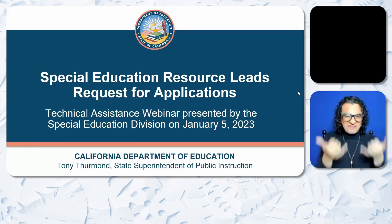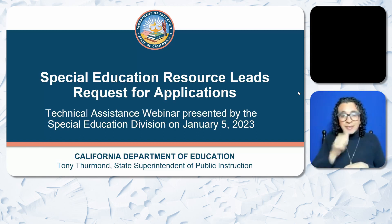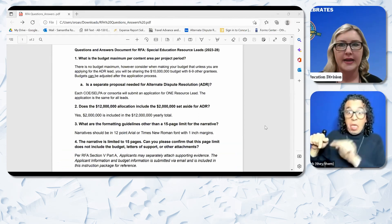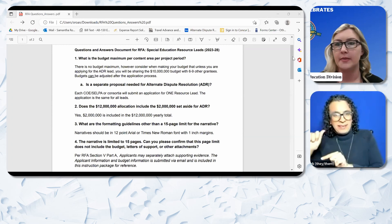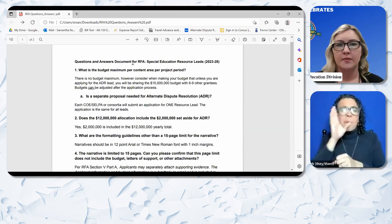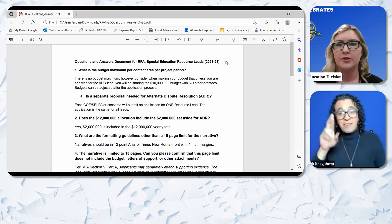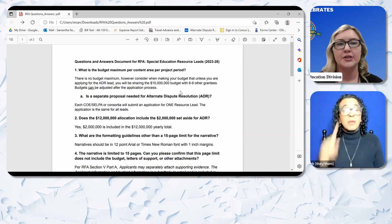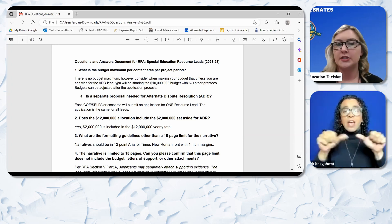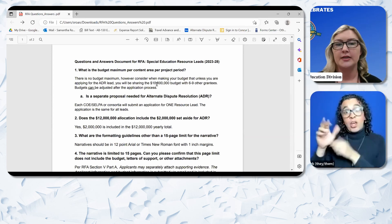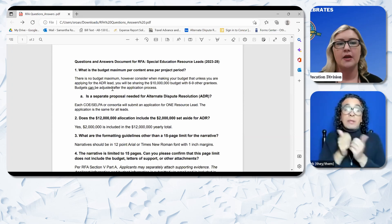Now we have time set aside for questions and answers. We're going to answer some questions received through email. Question 1: What is the budget maximum per content area per project period? There is no budget maximum. However, unless you are applying for the ADR lead specifically, you will be sharing the $10 million budget with six to nine other grantees per year. Budgets can be adjusted after the application process. Is a separate proposal needed for ADR? Each COE, SELPA, or consortia will submit an application for one resource lead — the application is the same for all leads.